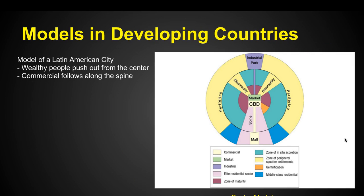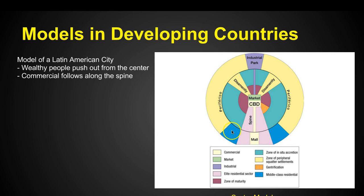In developing countries — like Latin America in the Western Hemisphere — the sector model shows wealthy people pushing out from the center in an elite residential sector. It's not necessarily a full concentric zone, but wealthy people live together in a wedge moving away from the city center. Middle class ties off the elite. Going back into the CBD, there's a gentrification process where people try to move back in and make it a nicer area to live, whereas before it had been dilapidated and deteriorating.